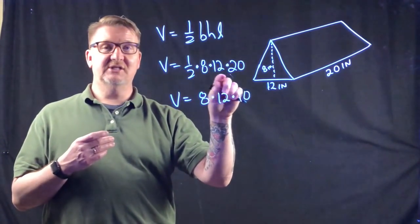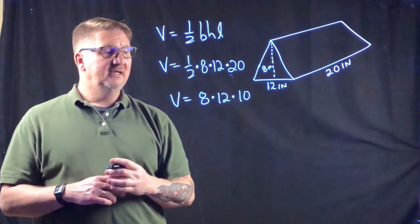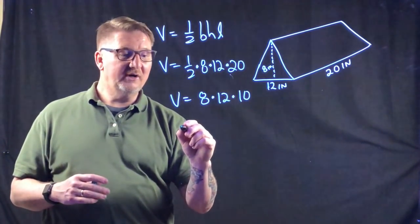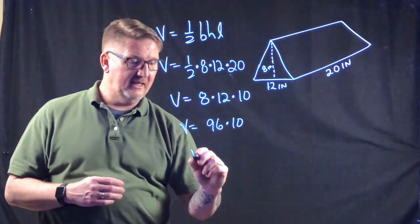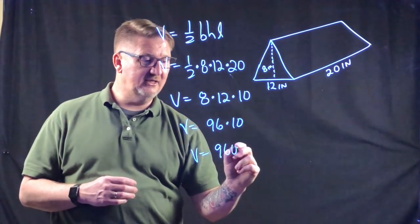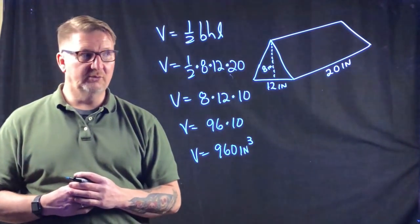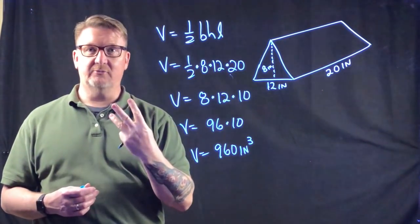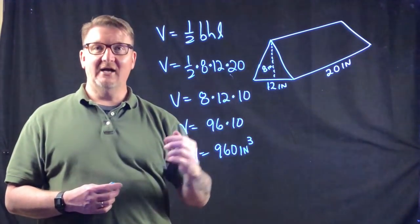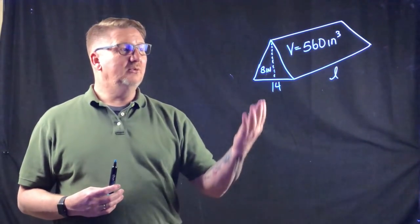Now I can easily multiply: 8 times 12 is 96, and 96 times 10 is 960. The volume is 960 inches cubed. Even though this is a triangular prism, our units are cubic because we're describing three-dimensional volume. That's how you find the volume of a triangular prism when given all the information.